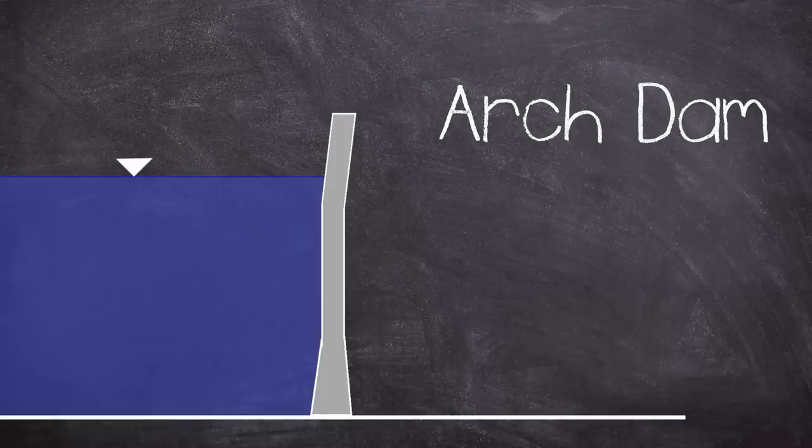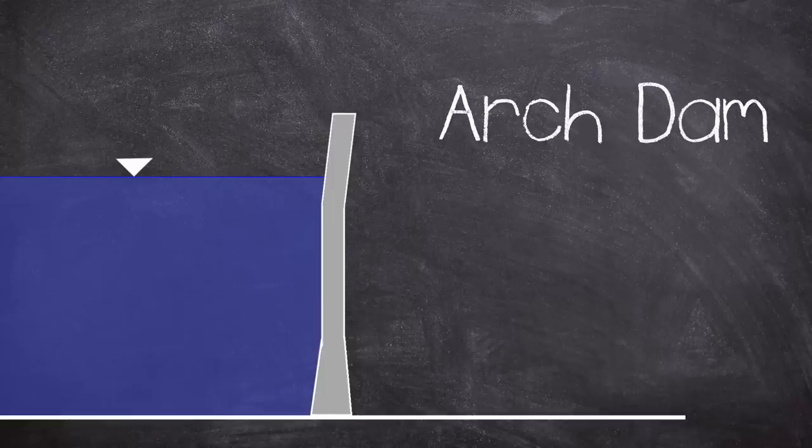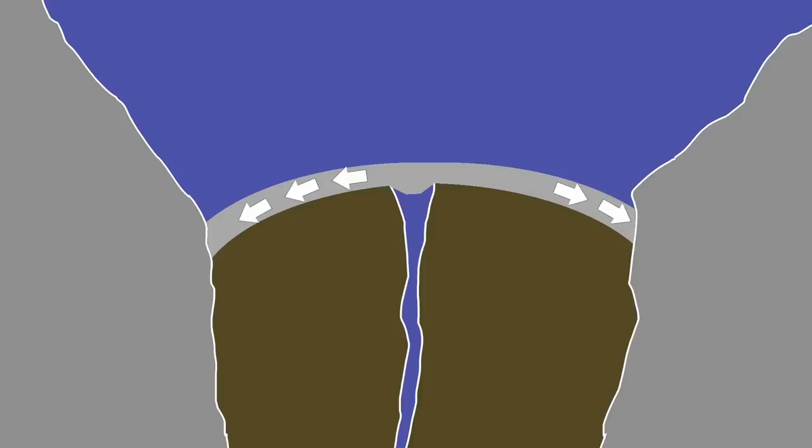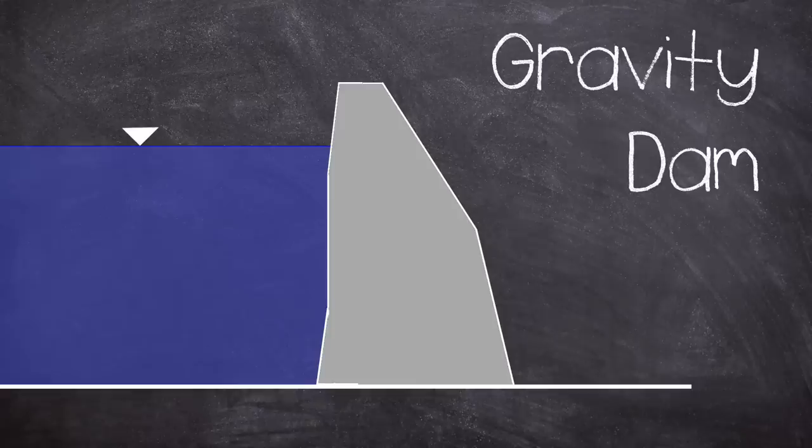The dam was going to be an arch dam. These had a number of advantages, most notably cost, as it uses a thin curved structure which spreads the weight of the reservoir into presumably solid banks. In comparison, the 1800s design was going to be a gravity type, which is very large and expensive.